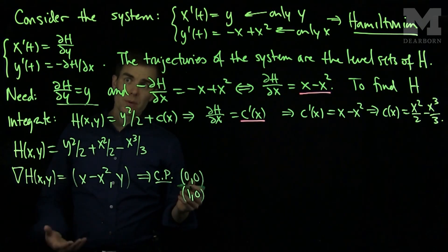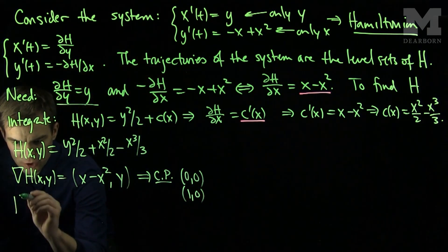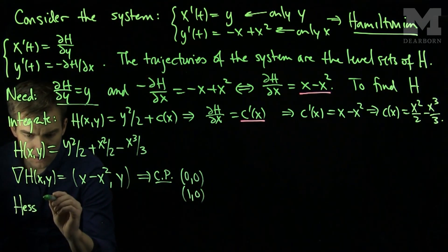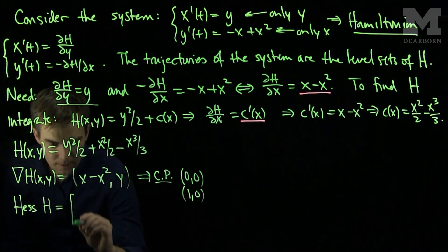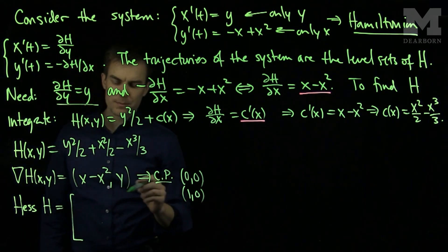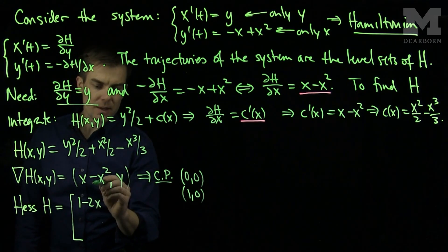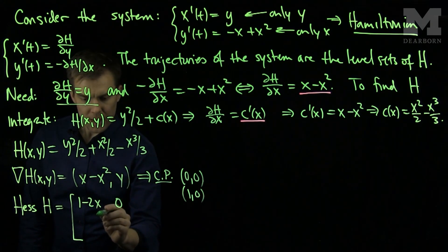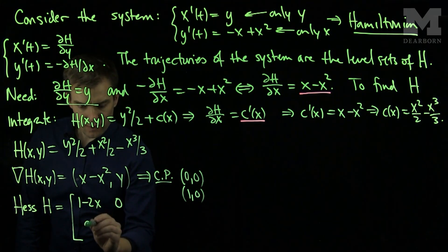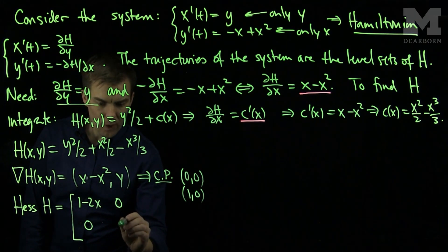And to classify these critical points, we compute the Hessian of H. The Hessian of H is the matrix of second derivatives. So I'll have the xx derivative here, so that'll be 1 - 2x. The xy derivative, which is 0. The yx derivative, which is 0. And the yy derivative, which is 1.